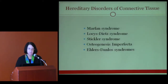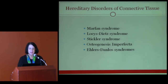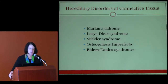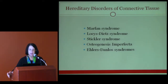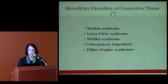The five most common hereditary disorders of connective tissue — and this designation is arbitrary — include Marfan syndrome, Loeys-Dietz syndrome, Stickler syndrome, osteogenesis imperfecta, and the Ehlers-Danlos syndromes, and I'm going to address each of these in turn.